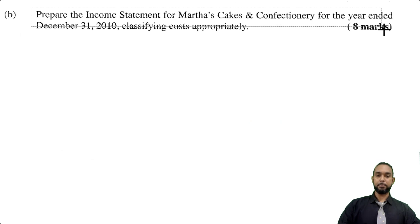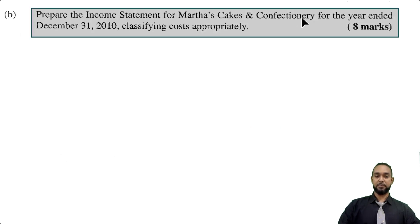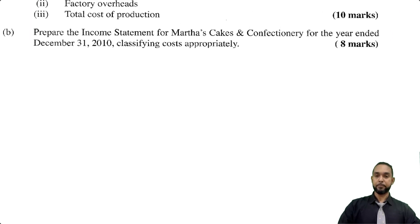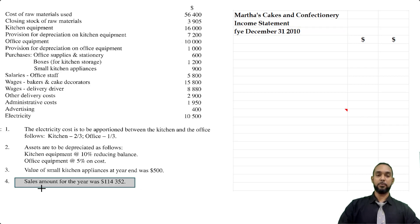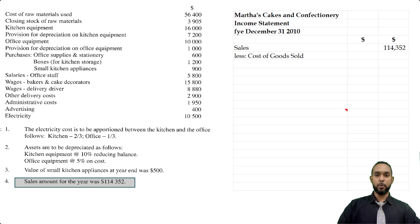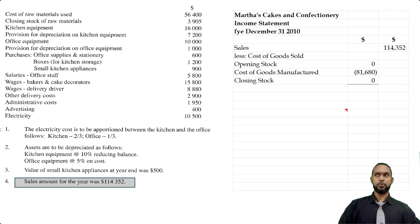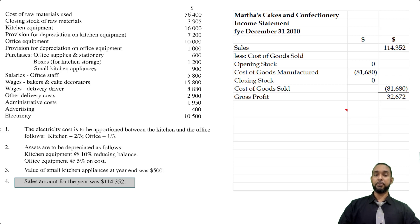Part B asks us to prepare the income statement for Martha's Cakes and Confectionary for the year ended December 31st, 2010, classifying costs appropriately. Please head up properly. The first item is sales of $114,352. Less cost of goods sold: we have no opening stock of finished goods, the cost of goods manufactured is $81,680 from the manufacturing account, and no closing stock either. So cost of sales equals $81,680, giving us a gross profit of $32,672.